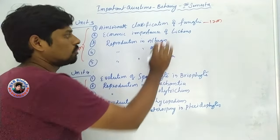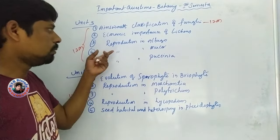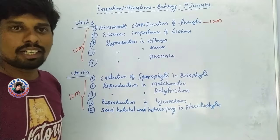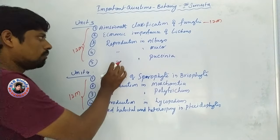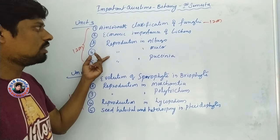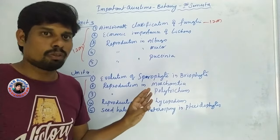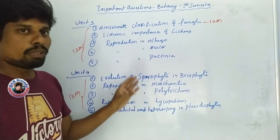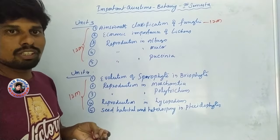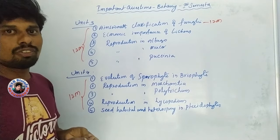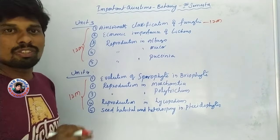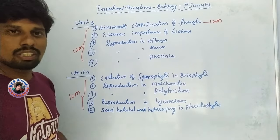Reproduction in Albugo — this is a 2-mark question. Reproduction in Mucor — this is a 2-mark question. Reproduction in Peziza is also covered. For Albugo, you need to know its structure, characters, and reproduction for different mark allocations.